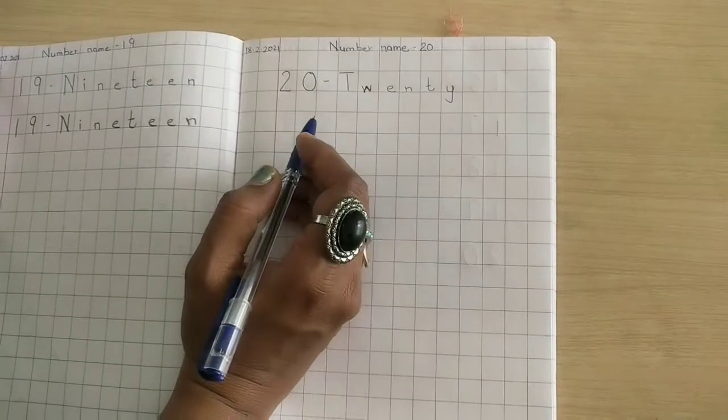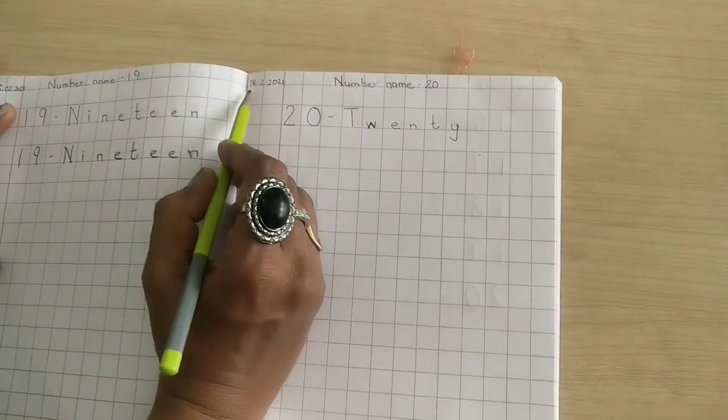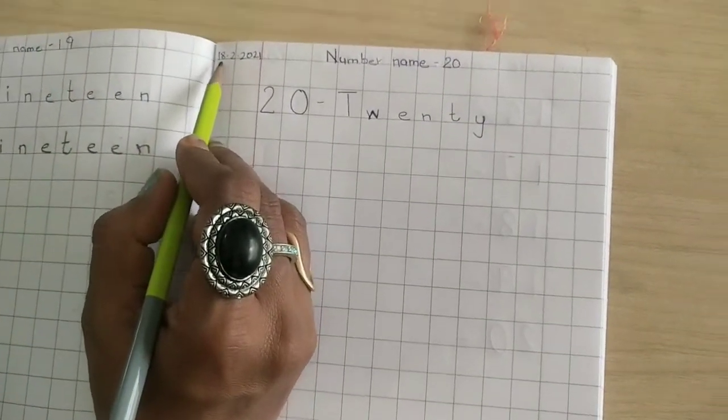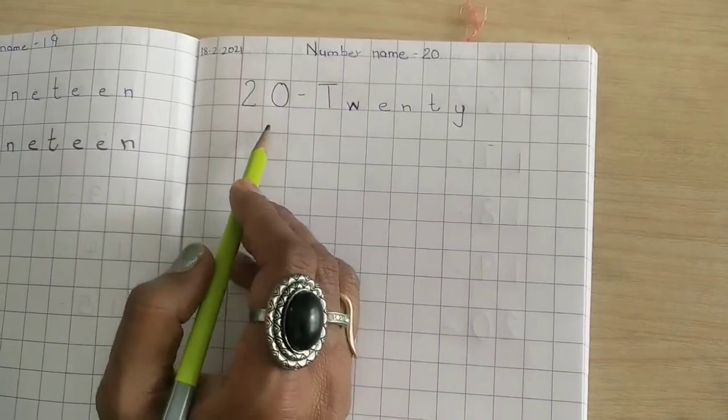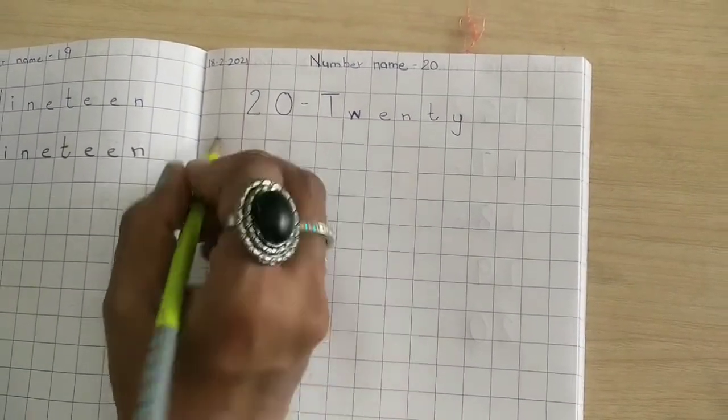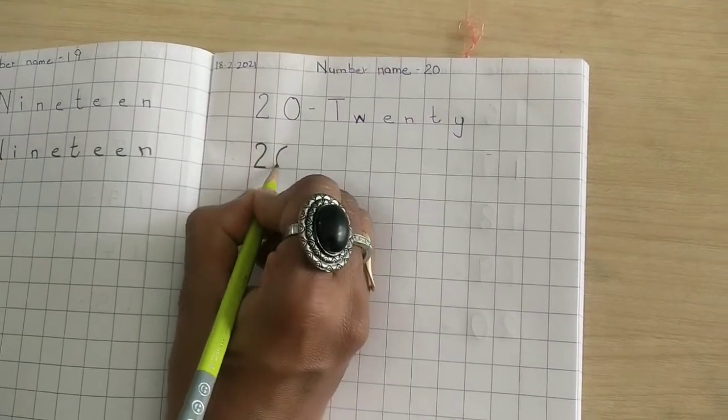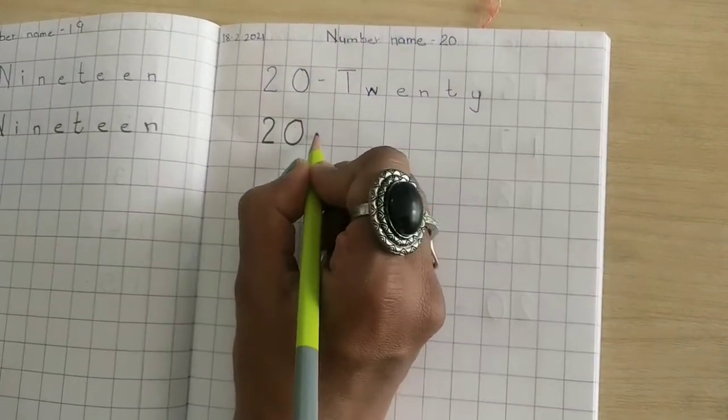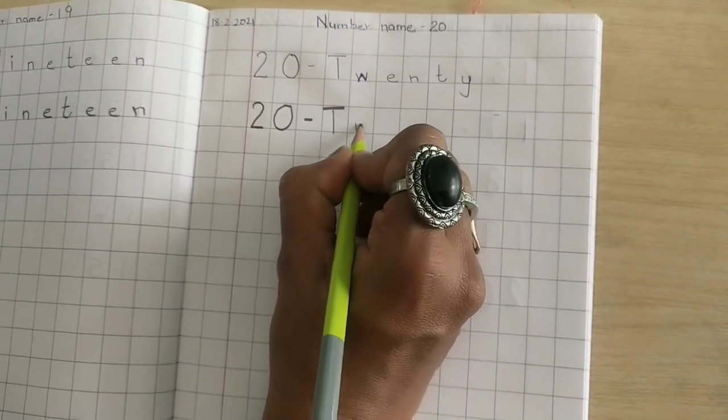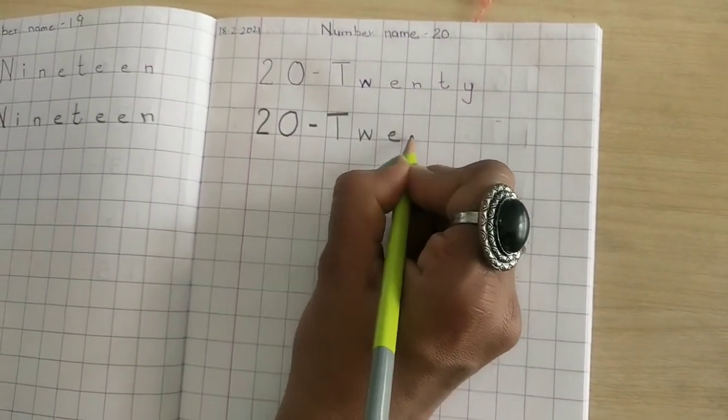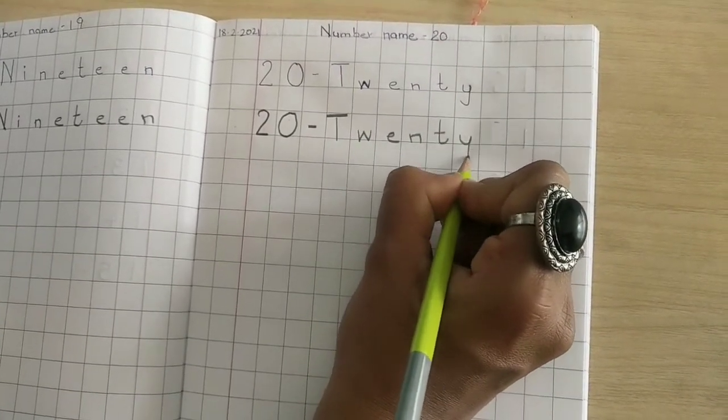Children, take out your maths notebook. In that, put today's date. Number name 20. Leave this line. Write down 2, 0, 20. Small dash. Number name 20. T, W, E, N, T, Y, 20.